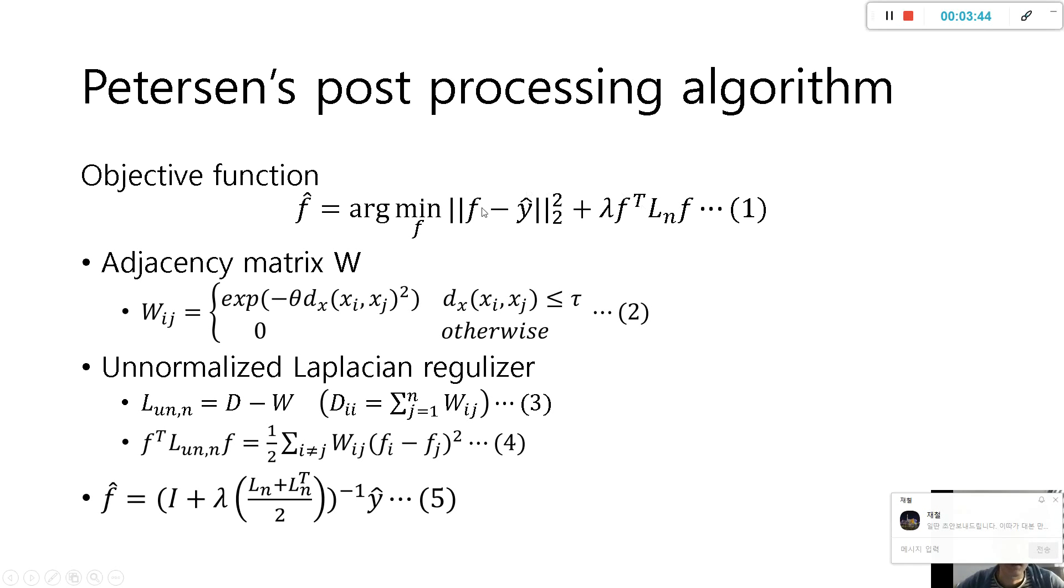Laplacian matrix can be easily defined with adjacency matrix W. D is a diagonal matrix where diagonal elements are the sum of rows in adjacency matrix. And Laplacian matrix can be calculated easily just by D minus W. Then f transpose Ln f production can easily be calculated as equation 4.